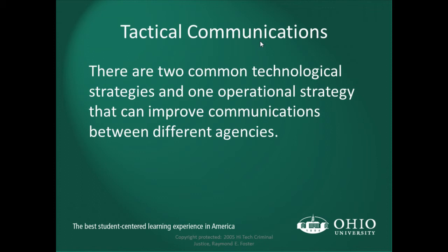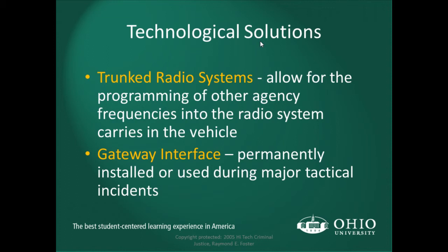There are two common tactical communication strategies: an operational strategy and technical solutions. For technical solutions, in more populated counties you'll often see trunked radio systems that allow programming of each agency's frequencies into the radio systems of other agencies. In our case, we have an 800 MHz trunked radio system. We share a system key with a few other agencies so they can program our frequencies into their radios and flip over to communicate during a common event.